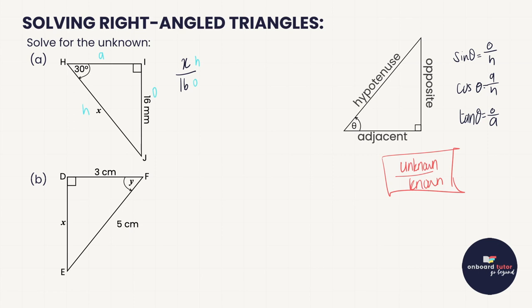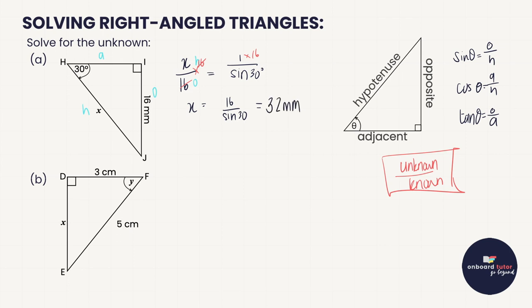SOHCAHTOA — sine is opposite over hypotenuse, cos is adjacent over hypotenuse, tan is opposite over adjacent. The key principle is to take the unknown side over the known side. For the upside-down sine case, we write it as one over sine of the given angle, then multiply both sides by 16 to get x equals 16 over sine 30, giving 32 mm.